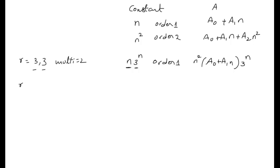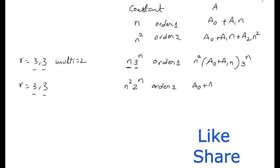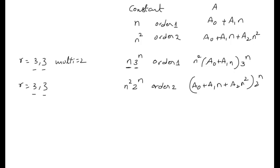Suppose roots are 3, 3 and the function is n²·2^n. The roots are the same but do not match the function (which involves 2^n). Since it is a polynomial of order 2, the particular solution is (a₀ + a₁·n + a₂·n²)·2^n — there is no question of multiplicity here, so no extra n² factor is needed.